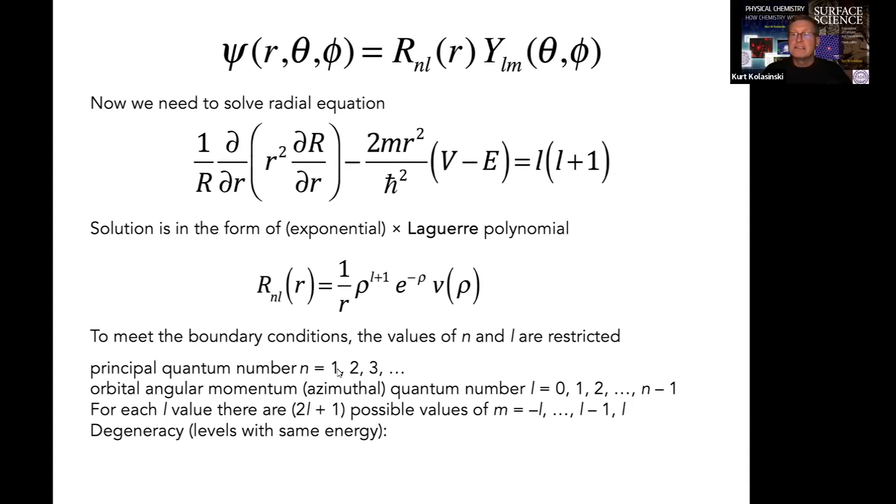It also influences the allowed values for the other two. This comes from the boundary conditions. l is an integer which can start at zero, it's never negative, and its maximum value is n minus one. There are two l plus one values of m or m sub l. They start at l and go down in unit steps. m can be plus or minus, so it starts at l and goes down to minus l.